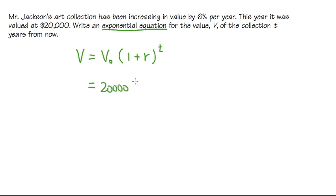Then we have the 1. It's always the 1 because we started with 100%, but then we need to find the r. In this case, it says that the value has been increasing by 6% per year, and the keyword is increasing. So we know that r will be a positive percent, 6%, which we can change to 0.06.